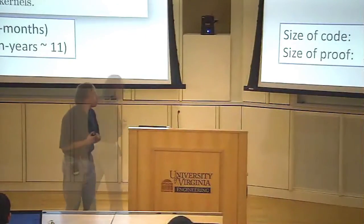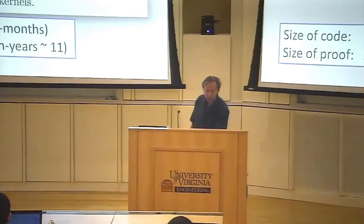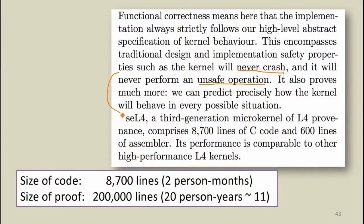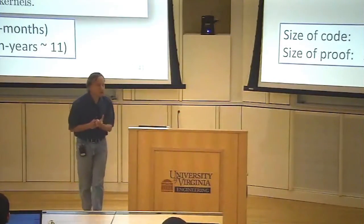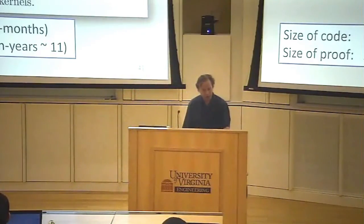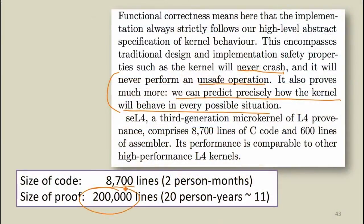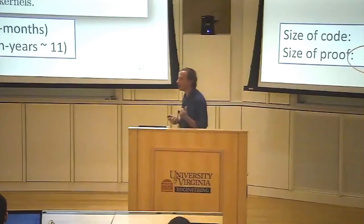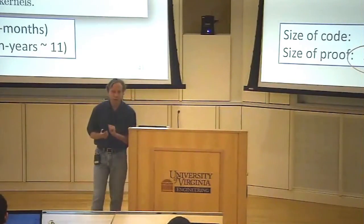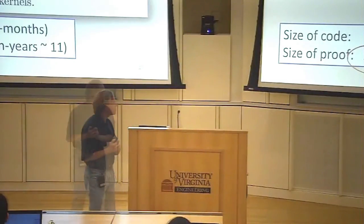Formally verifying the kernel means proving it behaves as specified in all situations — not just that it won't crash or use something unsafe, but a much stronger guarantee. The proof is 200,000 lines and took about 20 person-years of effort to create, even though implementing the kernel itself only takes a few months. So proving correctness is much harder than creating the kernel, but given the advantages of having a truly stable and secure kernel, that effort may be worthwhile.